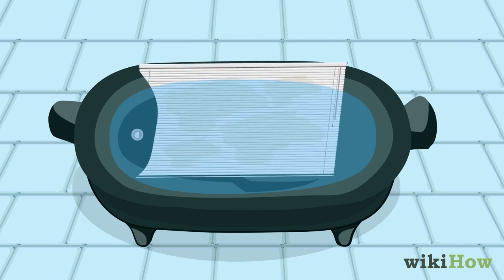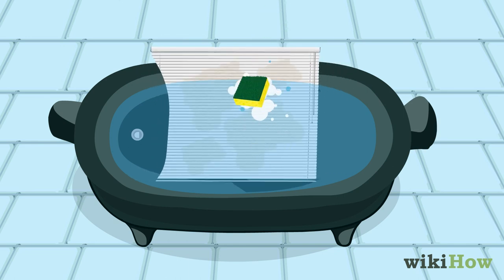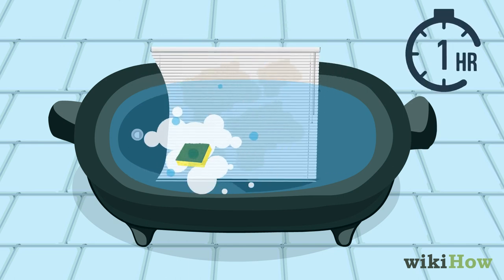Swish the blinds around in the tub, or use a rag or sponge to loosen the dirt. Then let them soak for about an hour.